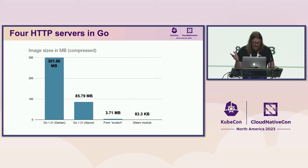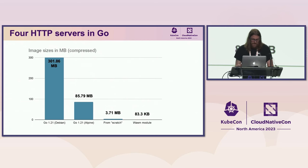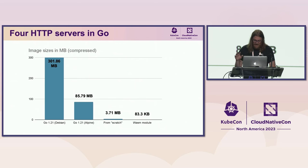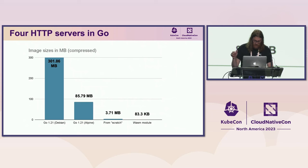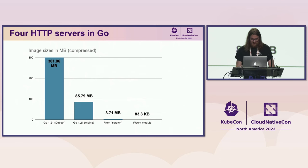Here we've got four approaches to a simple HTTP server written in Go. First, the default Debian-based Go 1.21 image with a single-stage build that clocks in at 301 megabytes. Next, a single-stage build on the Alpine-based Go image, which takes us down to 85 megabytes. Third is a statically-linked binary wrapped in the scratch base image, which gets down to four megabytes. Last is a WebAssembly module that can run on Kubernetes at way under a megabyte — we'll come back to that at the end.